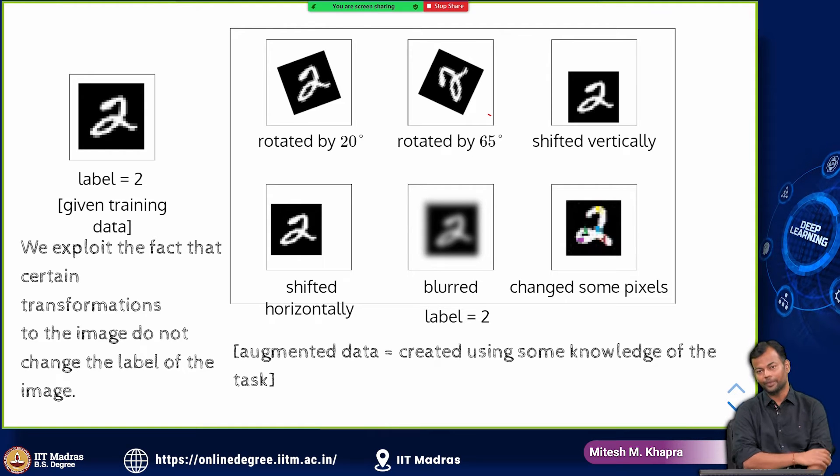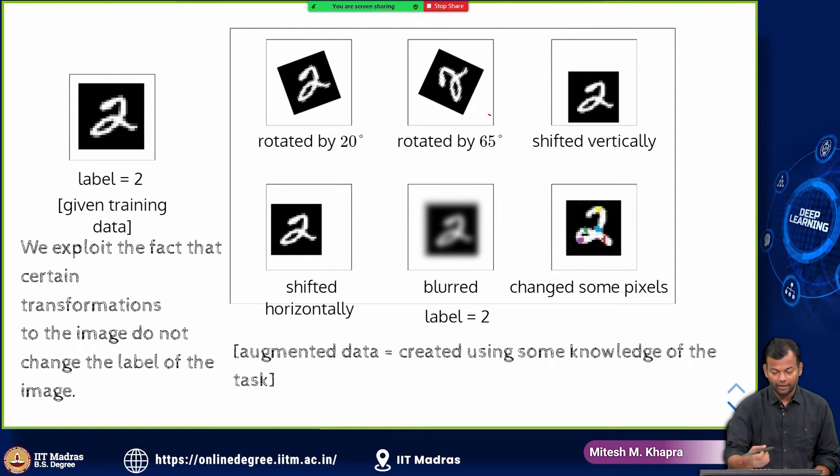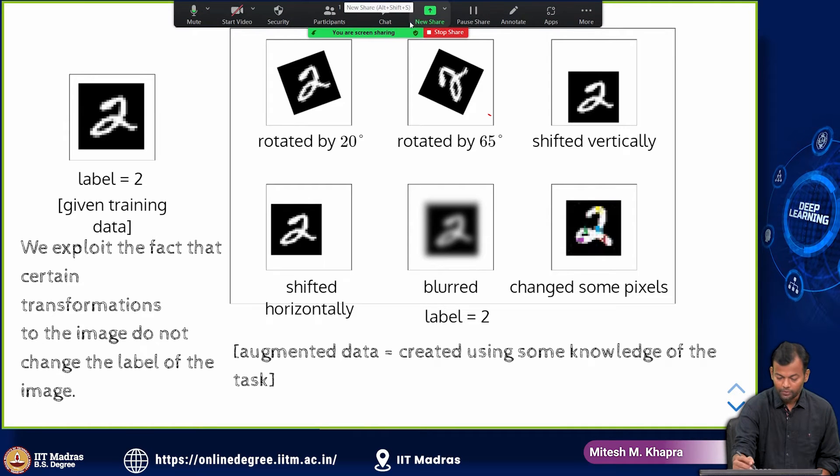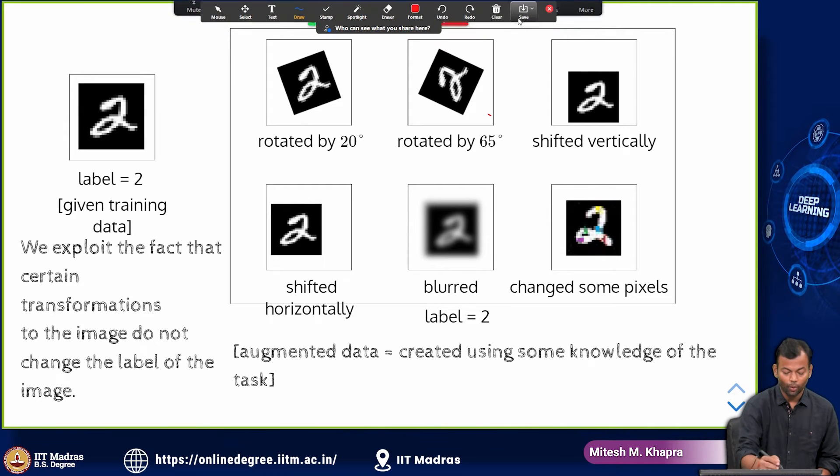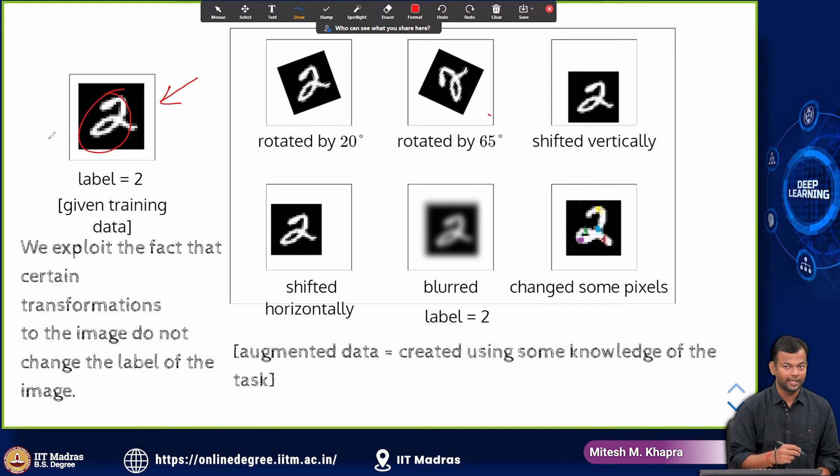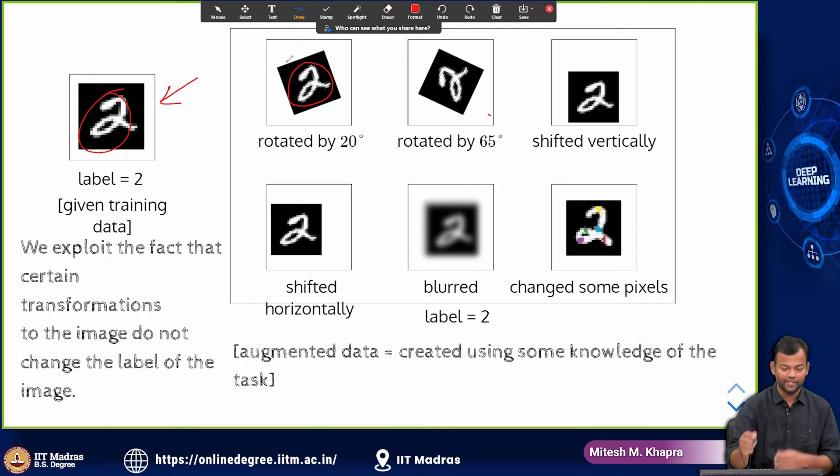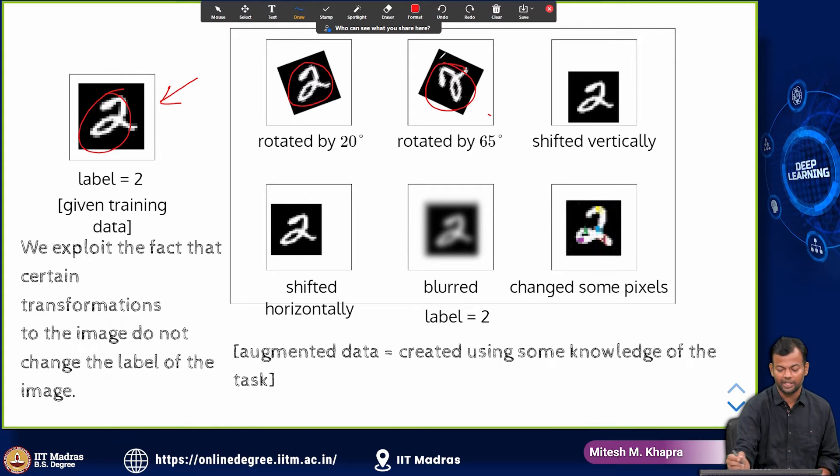And now how does this help? Now you have more training data and now it is no longer enough for the network to overfit that whenever I see this combination of pixels, I will mark it as 2. Because now that will not work for this guy, because now the pixels have changed a bit, the orientation of the pixels have changed and so on.